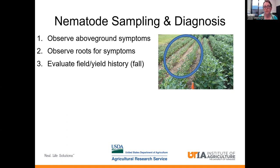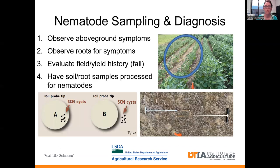Another thing that you might want to do is evaluate your field and your yield history, especially in the fall. You'll be able to see if you have a yield problem, and that is the best time to collect your soil samples as well. Your population densities are going to be the highest in the fall. You want to submit your soil samples to a proper diagnostic lab to see if you have a problem.